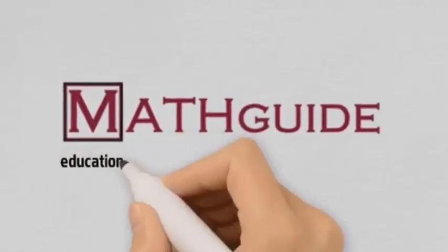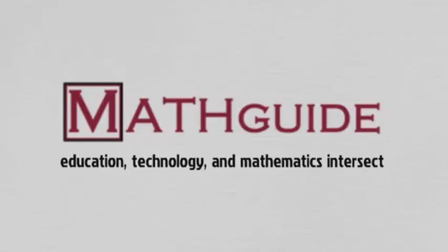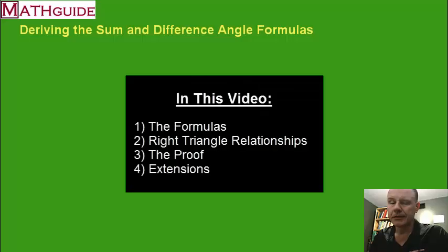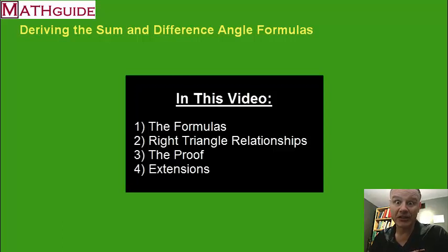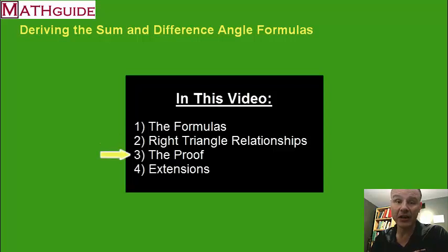This is MathGuide.com and my name is Mark Karadimos. This video will derive the sum and difference angle formulas, and we're going to do it in four sections. The first section we're going to talk about what those formulas are. The second section we're going to take a look at some right triangle relationships. In the third section we're going to get to the proof, and then in the fourth section I'm going to extend it so we can actually see where all the formulas come from. Let's get started.